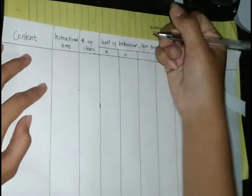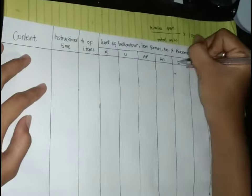We also include number and placement, and the Bloom's taxonomy of thinking skills which are remembering, understanding, applying, analyzing, evaluate, create, and last is the percentage.